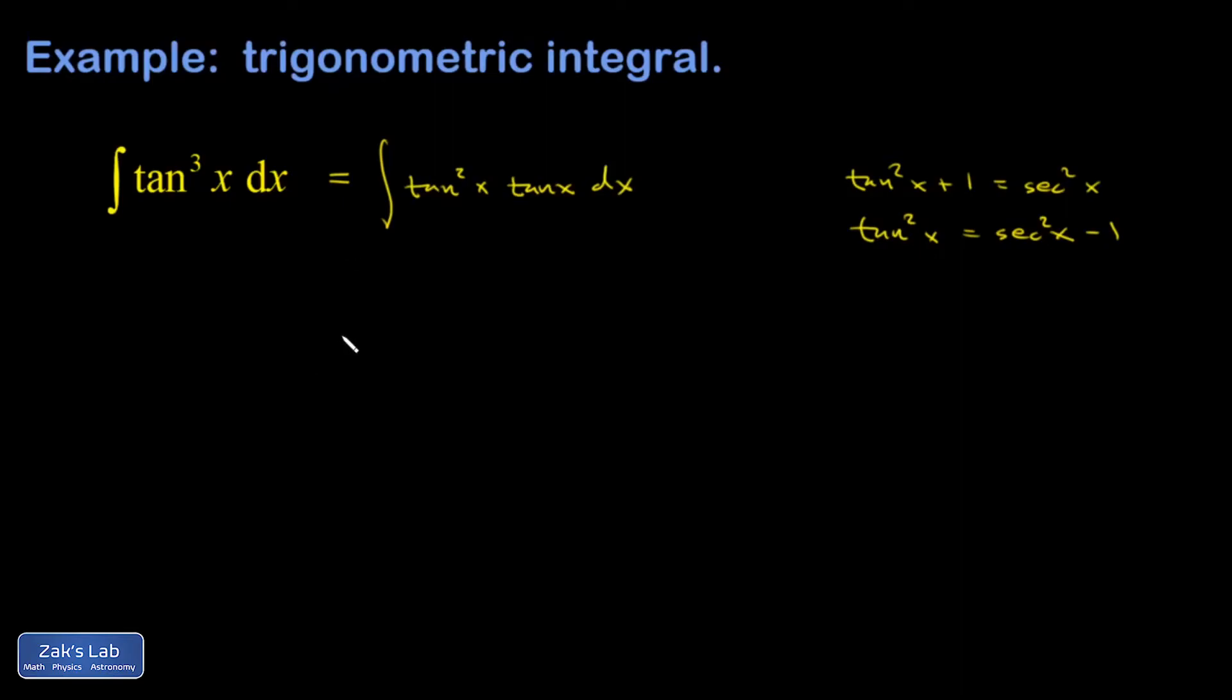Yeah, okay. So I'm going to write this as secant squared x minus 1 times tangent x dx.